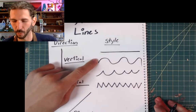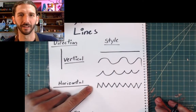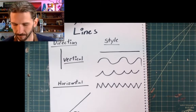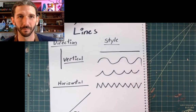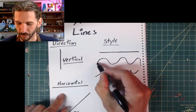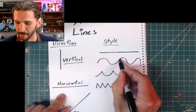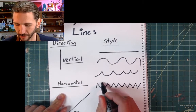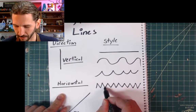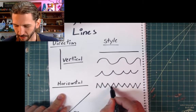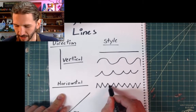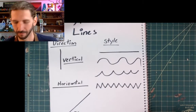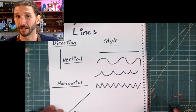Now look at the wavy line and the zigzag line — they both go up and down, but what's different about them? Notice how the wavy line is rounded on top and bottom, and the zigzag comes to a point. So you've got to stop at the top and then go down — up, down, up, down. There are straight lines in between but they stop at the top.